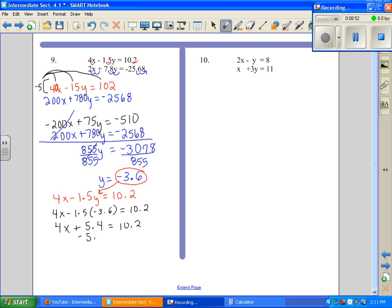So 4x plus 5.4 equals 10.2. Subtract 5.4 from both sides: 4x equals 4.8. Divide both sides by 4: x equals 1.2. Now we write these as an ordered pair: (1.2, negative 3.6). This is our solution to number 9.